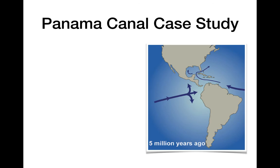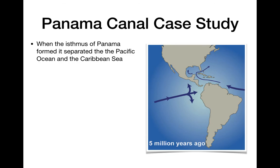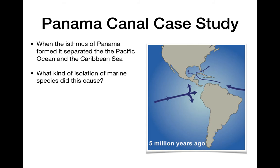That was our last type of isolation. Now let's look at the Panama Canal case study. The Isthmus of Panama is the tiny strip of land connecting North and Central America to South America. About five million years ago, tectonic plate movement formed it, separating the Pacific Ocean from the Caribbean Sea — bodies of water that were previously connected. This caused geographic isolation of marine species on each side, since fish can't climb over land to intermix those populations.